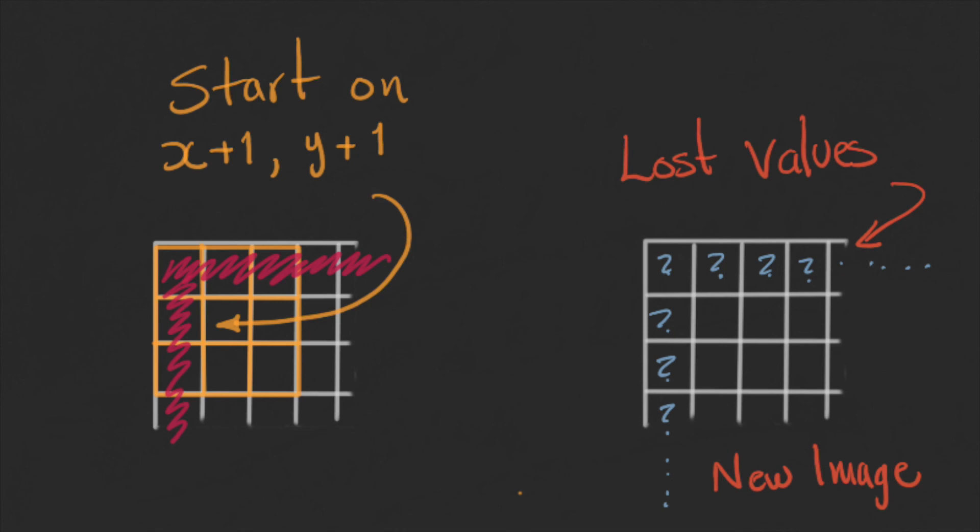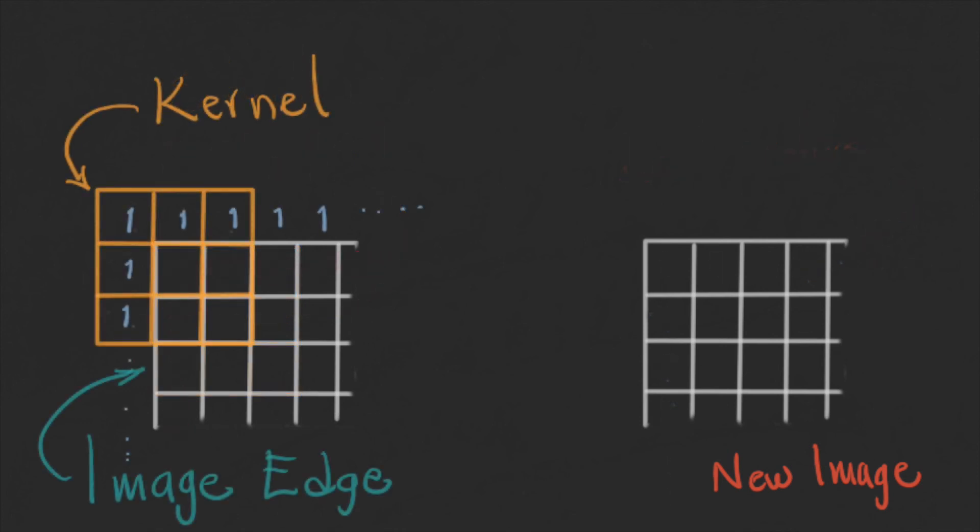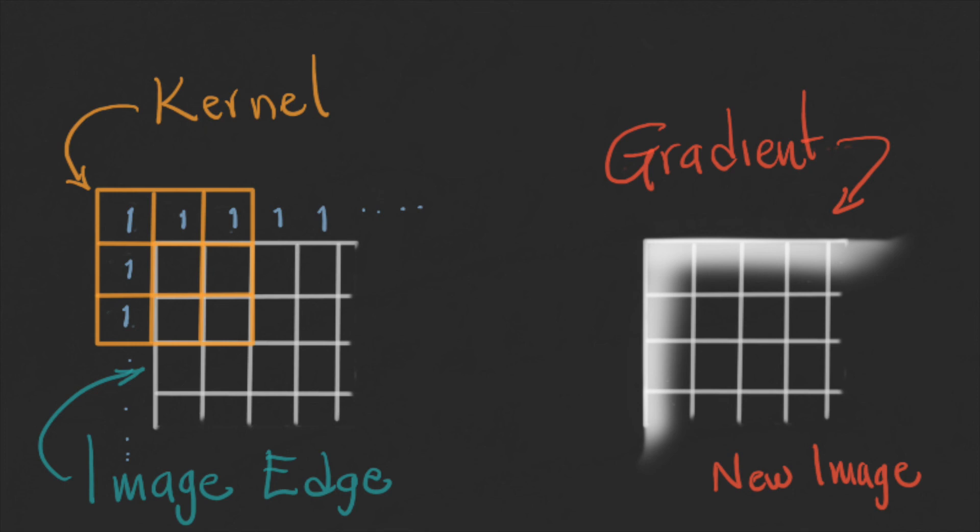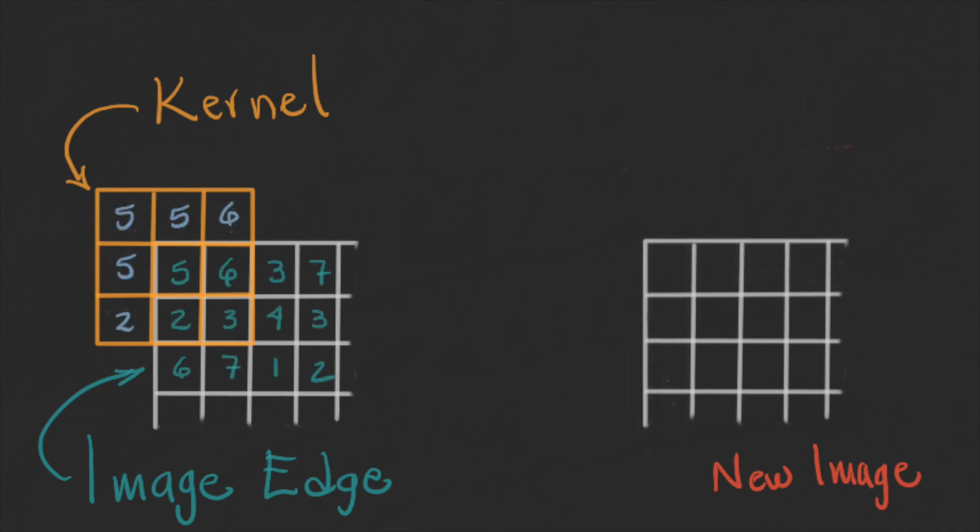Another approach is to pad the image with constant values. So we can add zeros or ones in the edge, just to be able to perform the convolution. However, this has the disadvantage of creating a gradient in the edge.